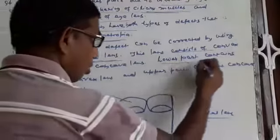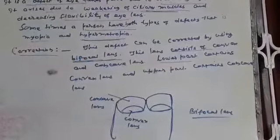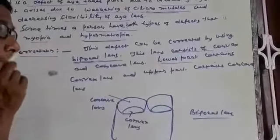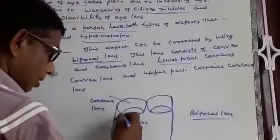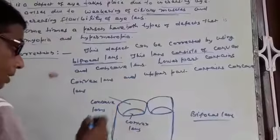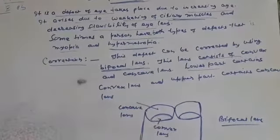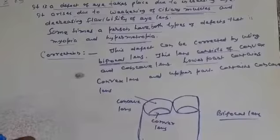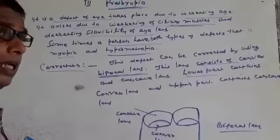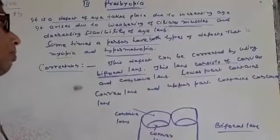Lower part of the lens, this is lower part, contains convex lens and upper part contains concave lens. This bifocal lens helps the person to see nearby objects as well as distant objects.